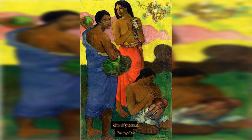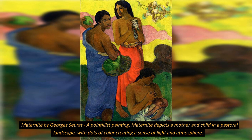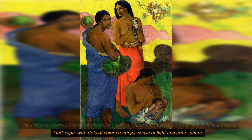Modernite by Georges Seurat: A pointillist painting, Modernite depicts a mother and child in a pastoral landscape, with dots of color creating a sense of light and atmosphere.